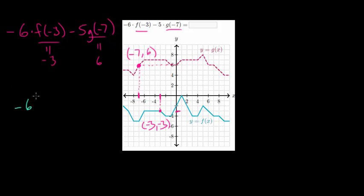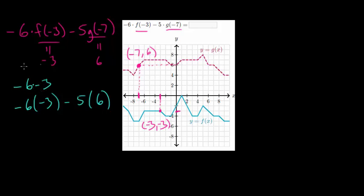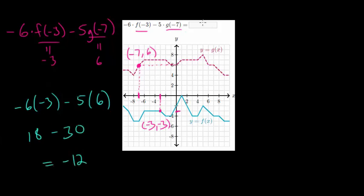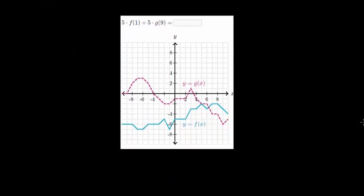From here we have minus 6 times minus 3 — again in parentheses to avoid mistakes with signs — and then minus 5 times 6. Without parentheses you might misread this as minus 6 minus 3, which many students confuse for subtraction rather than multiplication. So minus 6 times minus 3 is positive 18, and 5 times 6 is 30 which we're subtracting, giving a final answer of negative 12.